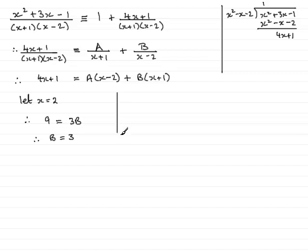And similarly, if I let x equal minus 1, which will make this bracket go to 0, then on the left-hand side here, we would have minus 4 plus 1, which is minus 3, so minus 3 equals minus 1 minus 2, so that's minus 3a. And then working that out gives a as 1.